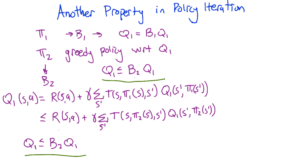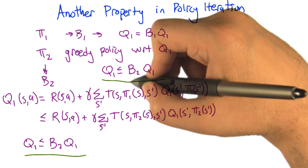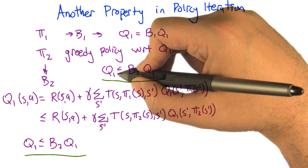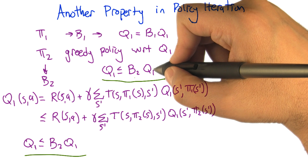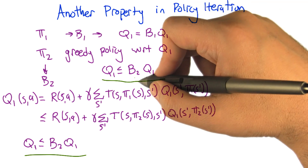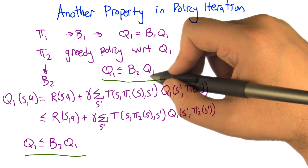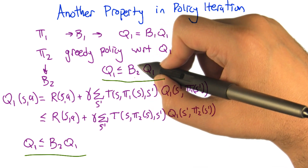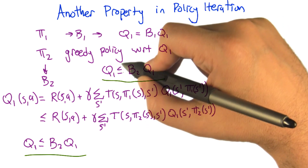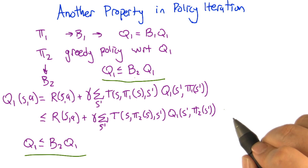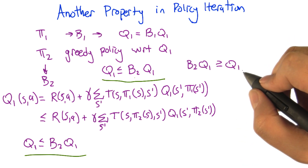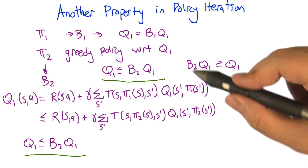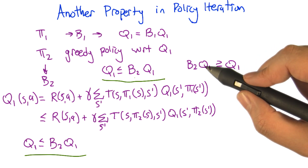I was thinking: shouldn't this be greater than or equal to? But I was reading it backwards. It could also be written as B2 applied to Q1 is greater than or equal to Q1, which is true, but the ordering feels backwards. Writing it the other way: when we look at that, it says that applying the greedy operator to Q1 makes it better than it was before. It's really the same thing.